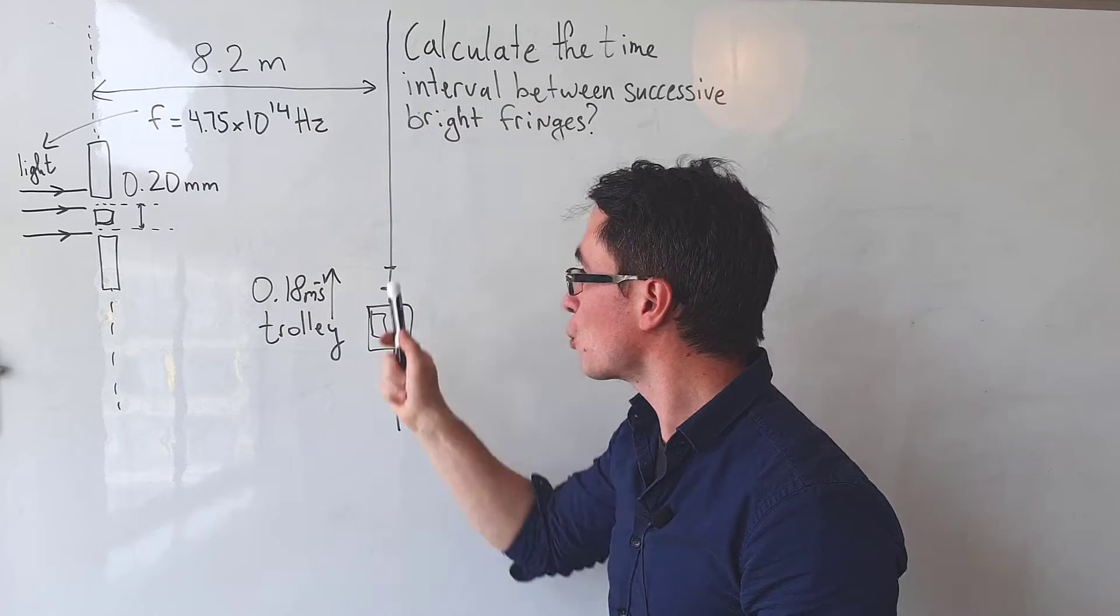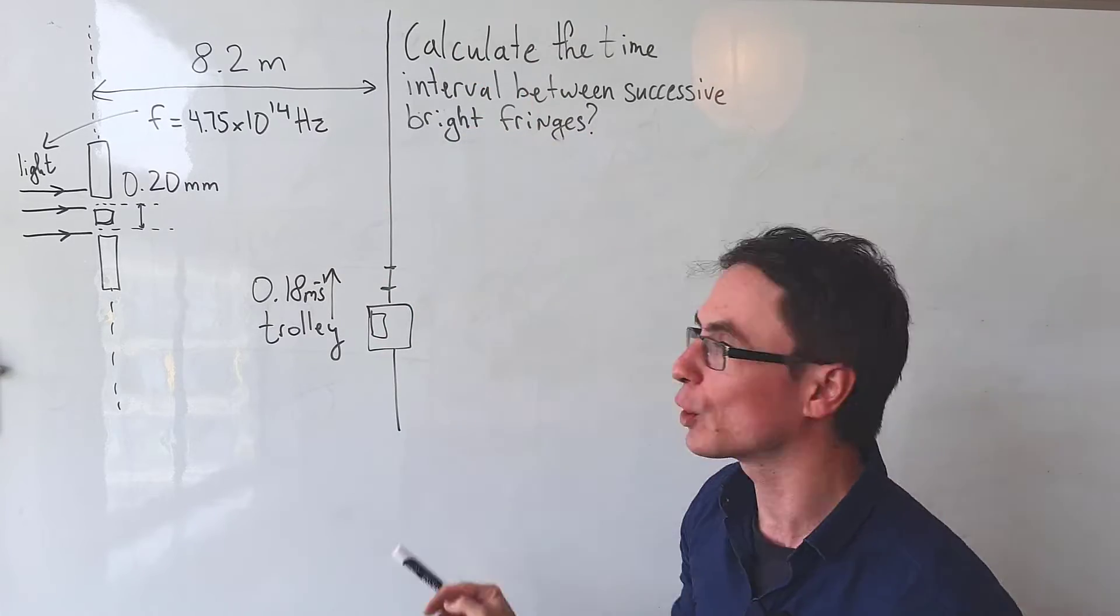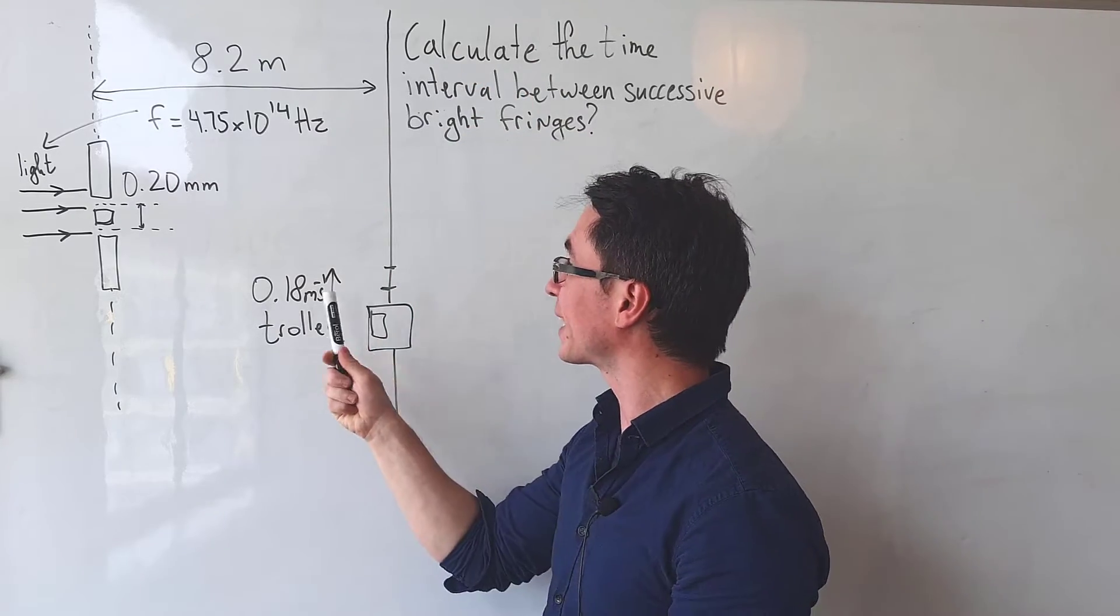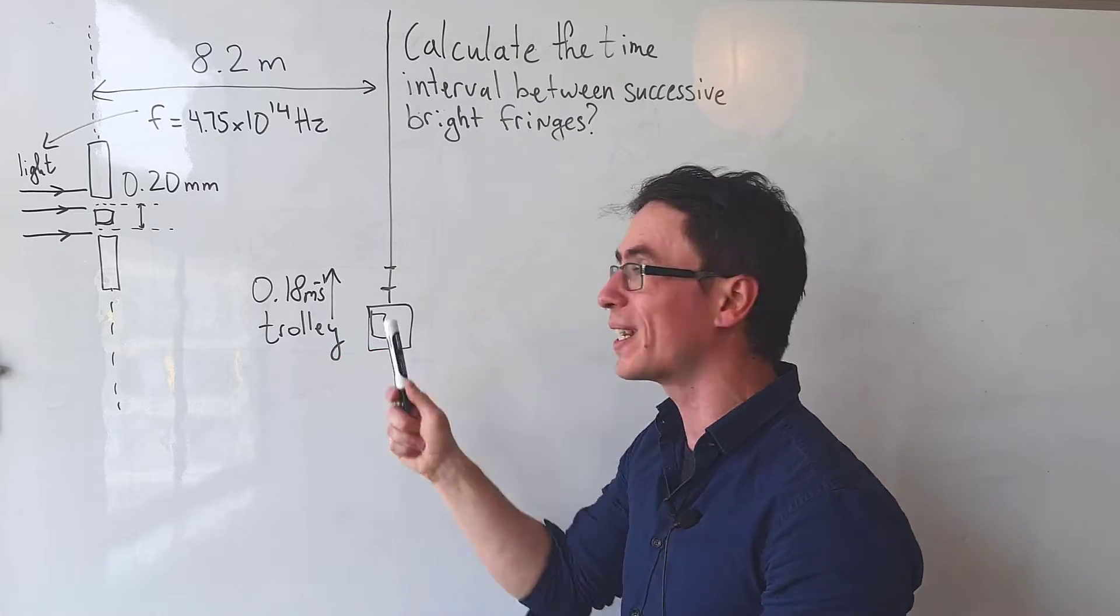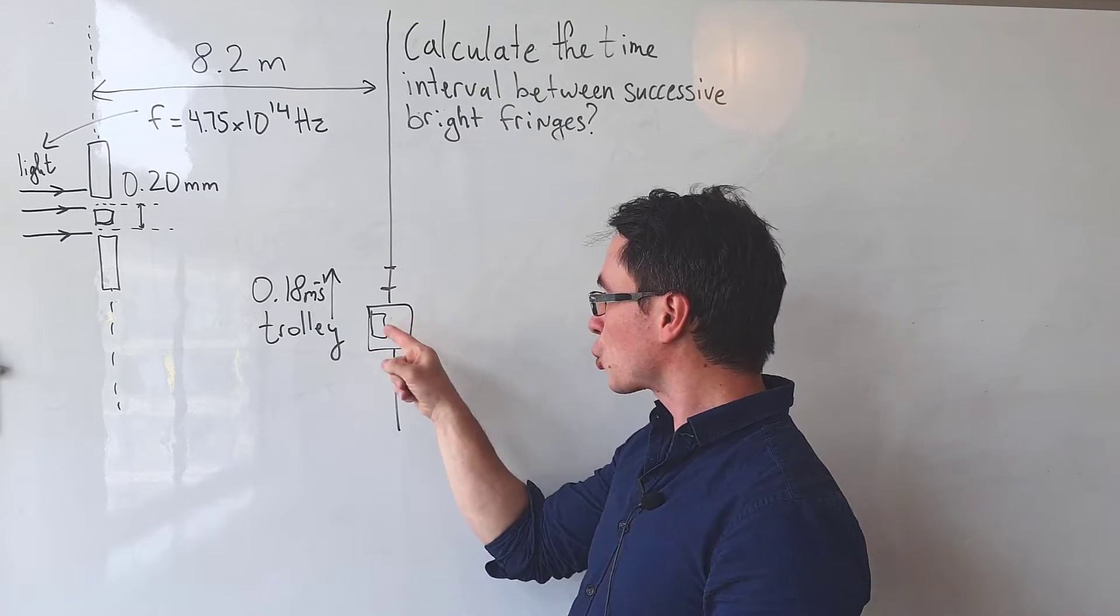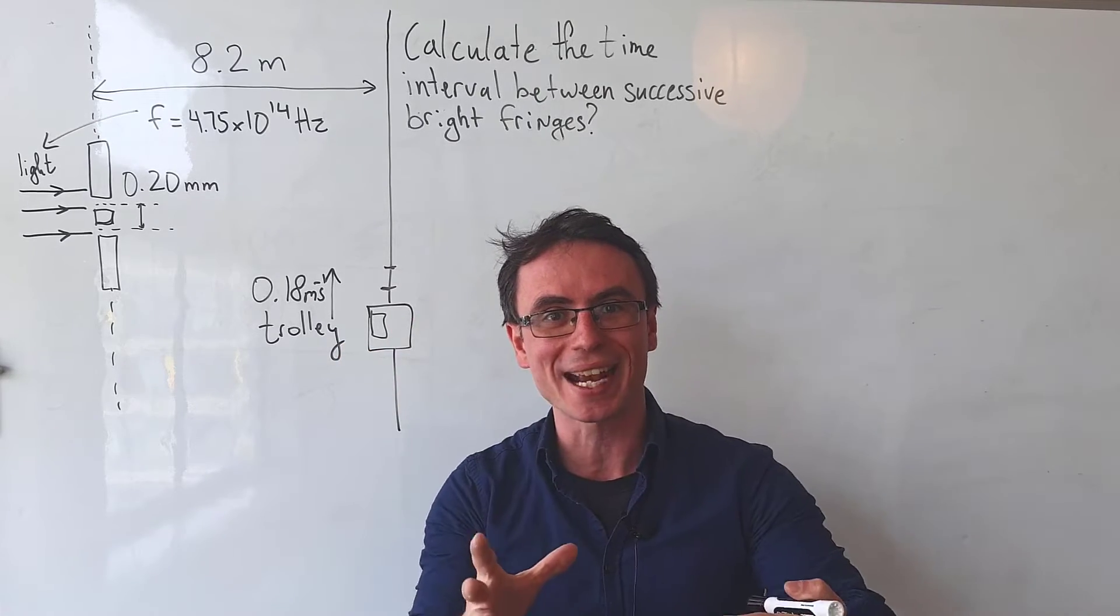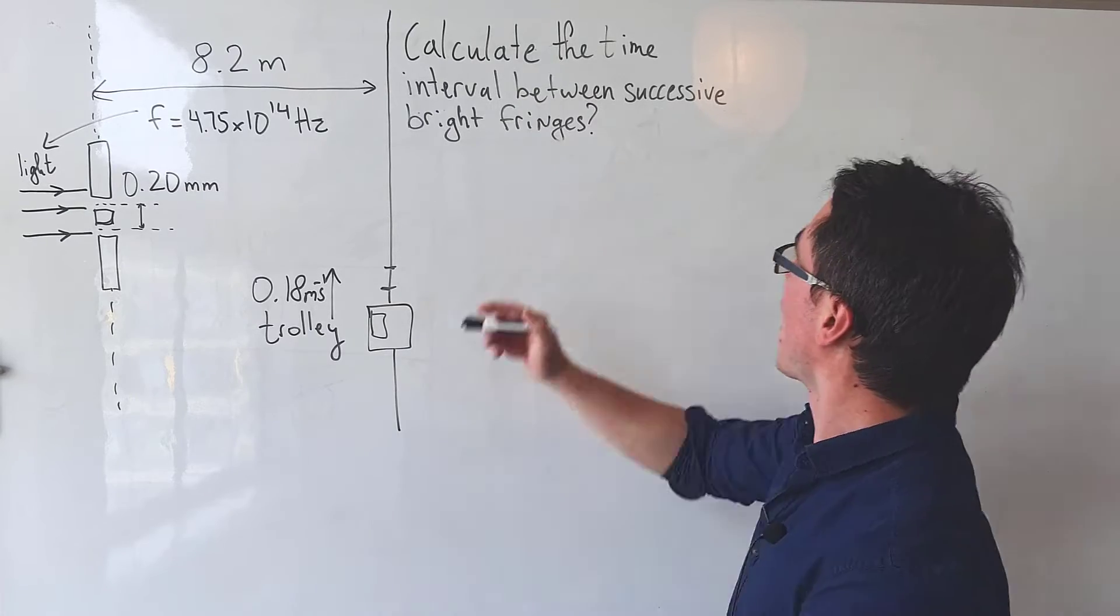Now 8.2 meters away there's a line at which a trolley is moving with a constant speed of 0.18 meters per second. The trolley has a little light detector at the top and what we're trying to find is the time interval between successive bright fringes.